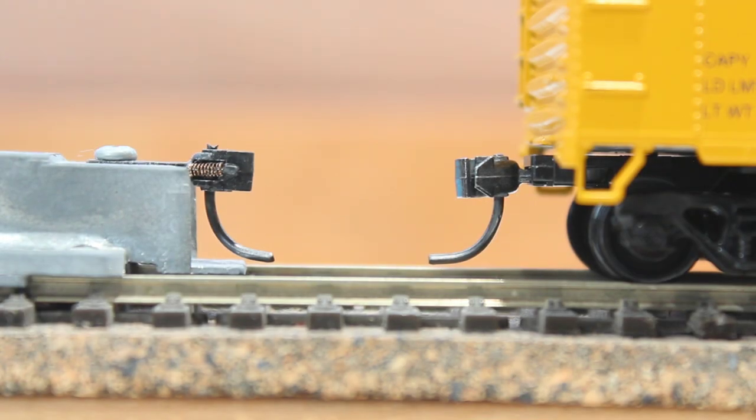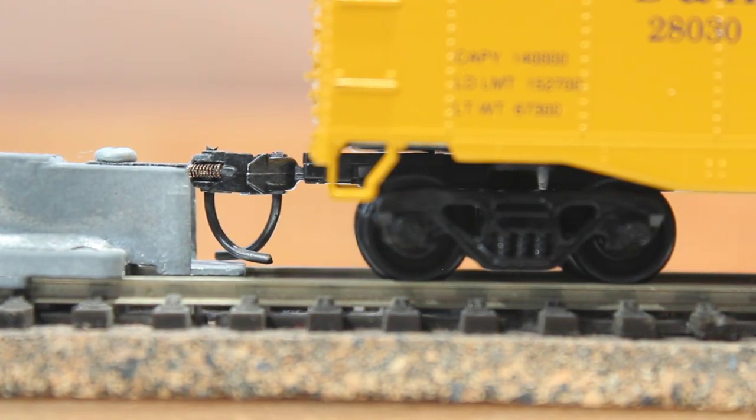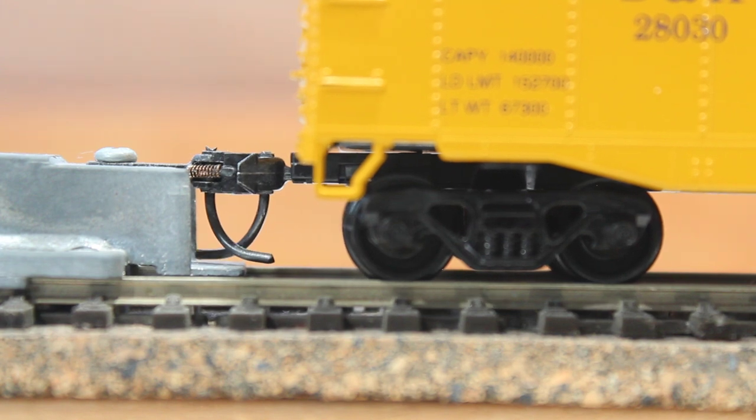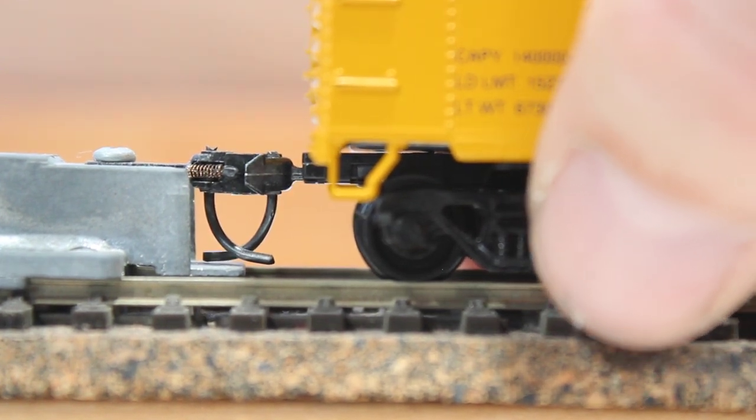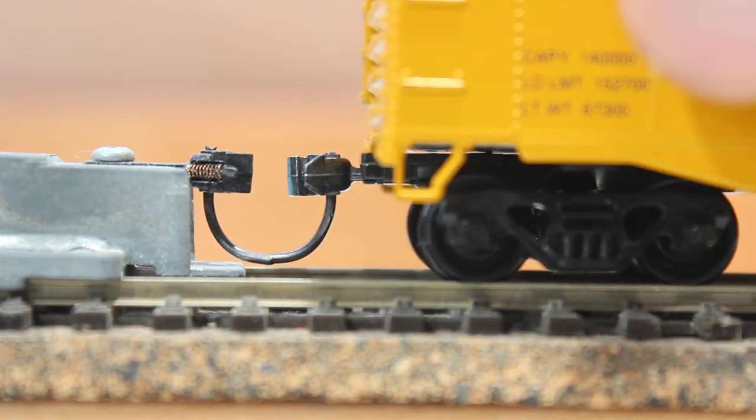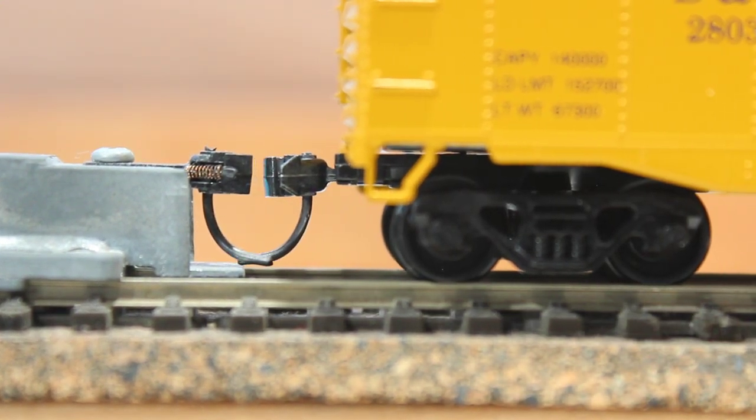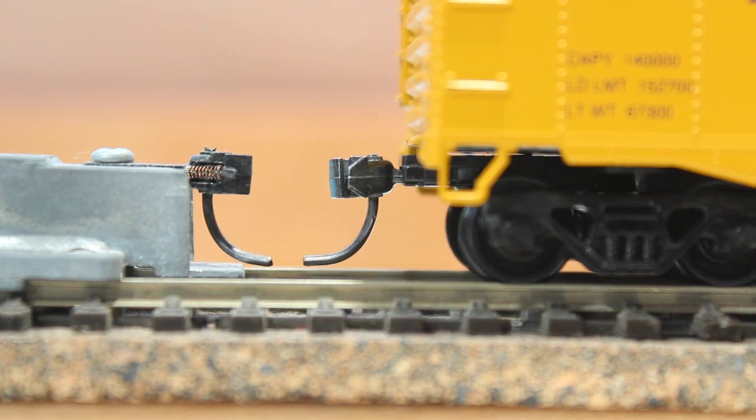Now we just need to check for coupler height. We got it on our coupler height gauge here. If we look, we can see that it lines up pretty nicely. That trip pin there just kind of touches the bottom. It's not bad, probably end up leaving it like that. It shouldn't give you any difficulty. It does sit above the track so that should work just fine.